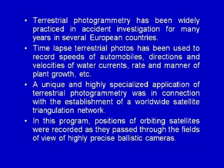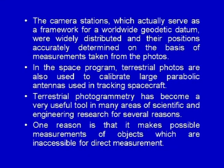Time-lapse terrestrial photographs have been used to record speeds of automobiles, directions and velocities of water currents, and the rate and manner of plant growth. A unique and highly specialized application of terrestrial photogrammetry was in connection with the establishment of a worldwide satellite triangulation network. In this program, positions of orbiting satellites were recorded as they passed through the field of view of highly precise ballistic cameras. The camera stations, which served as a framework for a worldwide geodetic datum, were widely distributed and their positions accurately determined on the basis of measurements taken from the photographs.